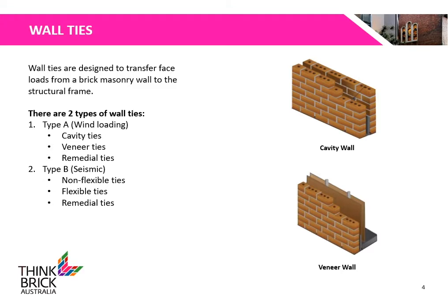Wall ties are designed to transfer face loads from a masonry wall to a structural frame. There are two types of wall ties: Type A, which is designed for wind loading, and Type B, which is designed for seismic loadings. Type A wall ties include cavity, veneer and remedial ties. Type B wall ties include flexible, non-flexible and remedial ties.